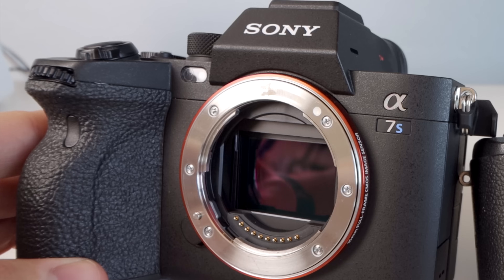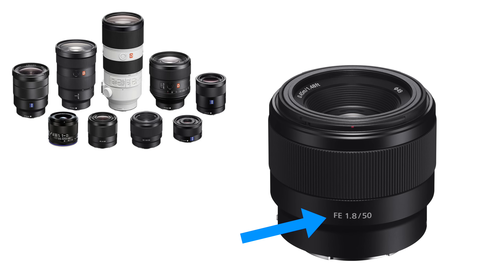Sony does something very similar. They have crop sensor mirrorless cameras and full frame mirrorless cameras, all using the E-mount. Lenses labeled FE — where F stands for full frame — will work on full frame Sony cameras as well as crop sensor cameras. However, if you have an APS-C sensor, you may not want to go with a full frame lens because it's gonna be much more expensive. I really don't recommend buying full frame lenses unless you know you're going to upgrade.